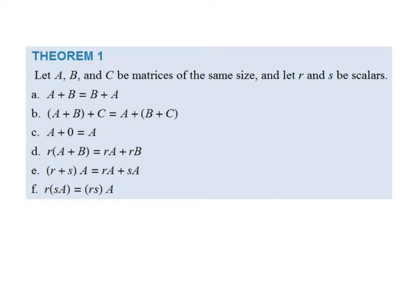Theorem 1 lists properties for sums and scalar multiples of matrices. Given matrices of the same size and scalars r and s: addition is commutative, the associative property holds, the additive identity is zero, a scalar distributes over a sum of matrices, a sum of scalars distributes over a matrix, and the associative property applies to scalar multiplication. All the familiar properties still apply.